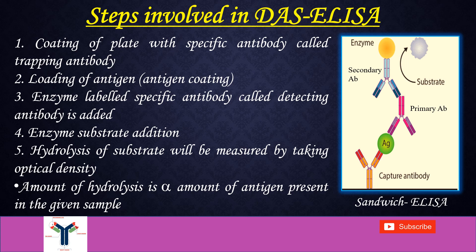In indirect double antibody sandwich ELISA, first we have to add the capture antibody, then loading of the antigen which we want to detect. Then we have to add the primary antibody which is not enzyme labelled. Then we have to add the secondary antibody which is enzyme conjugated. After addition of secondary antibody we add the substrate for the colour reaction, produced by the action of the enzyme on that substrate. Based on the colour reaction we can detect the presence of our protein of interest.